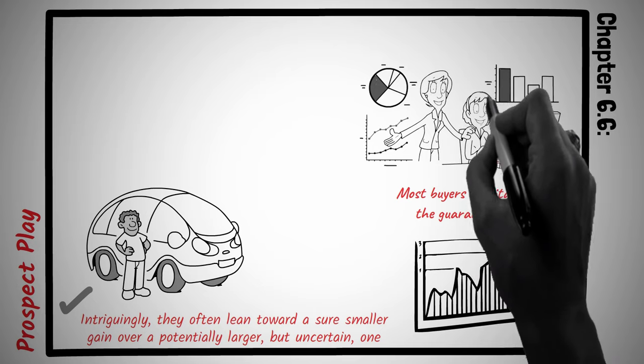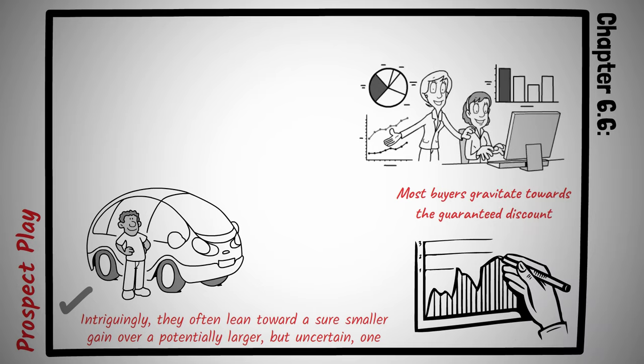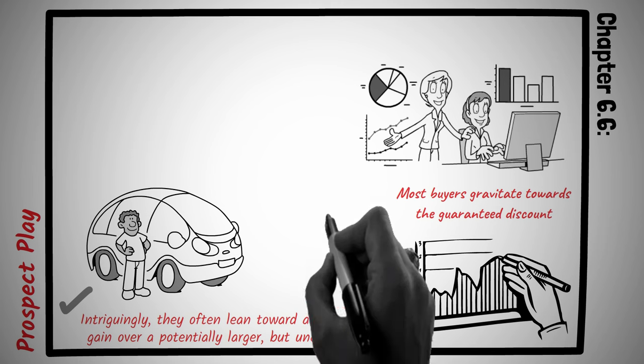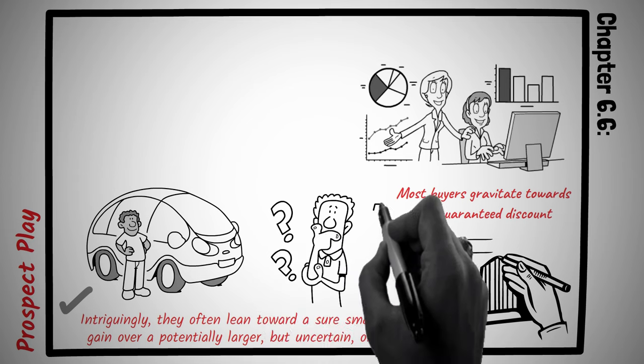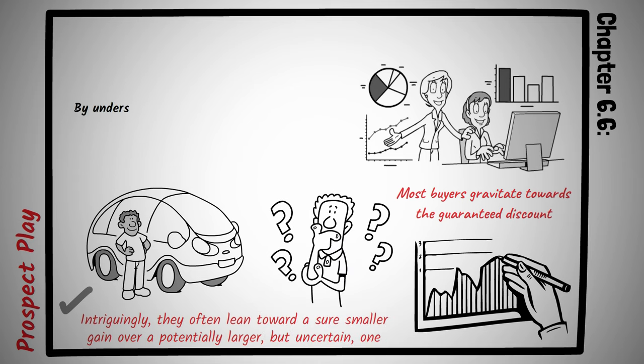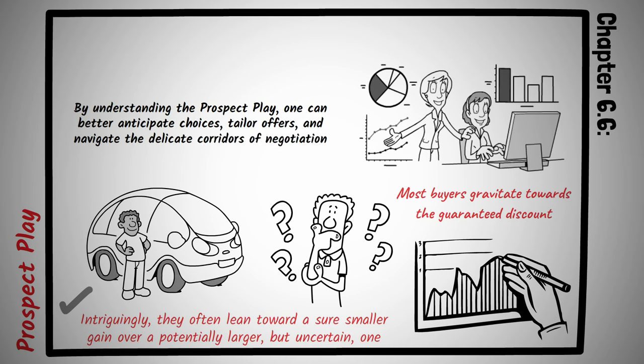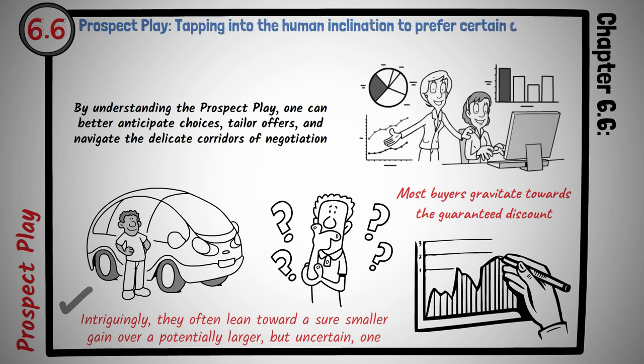Imagine you're organizing a fundraiser, instead of merely offering potential donors a chance to win a lavish yet uncertain prize, also provide an option of a smaller, guaranteed token of appreciation for their contribution. You might find that many prefer the certainty of the immediate token over the prospect of the grand or uncertain reward. The intricacies of human decision-making often revolve around the dance between certainty and potential. By understanding the prospect play, one can better anticipate choices, tailor offers, and navigate the delicate corridors of negotiation, leveraging the human predilection for sure outcomes. Principle number 6.6 is prospect play, tapping into the human inclination to prefer certain outcomes, even when faced with potentially greater uncertain ones.